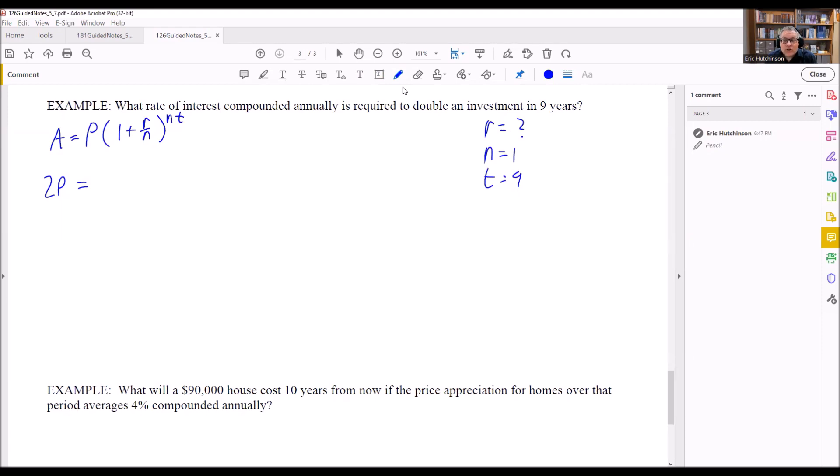Now, if the problem says triple, then I would do a 3P or quadruple 4P and so forth. But this one says double an investment. So if you double your investment, that means you're doubling the amount you originally invest. So you're doubling the P, which means that's going to be a 2P there.